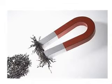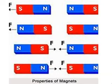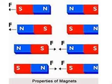So what is a magnet? A magnet is something that attracts iron, and it always has a North pole and a South pole. This is true for all magnets — be it U-shaped or bar magnets — they all have a North pole and a South pole.